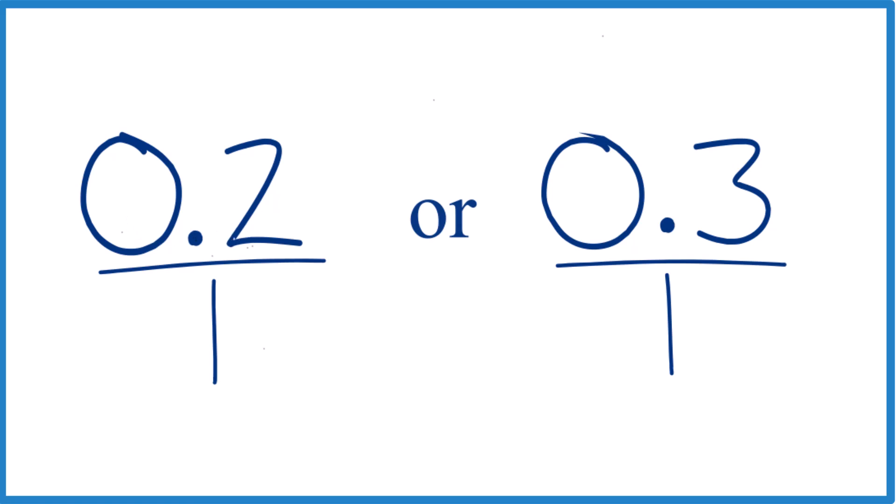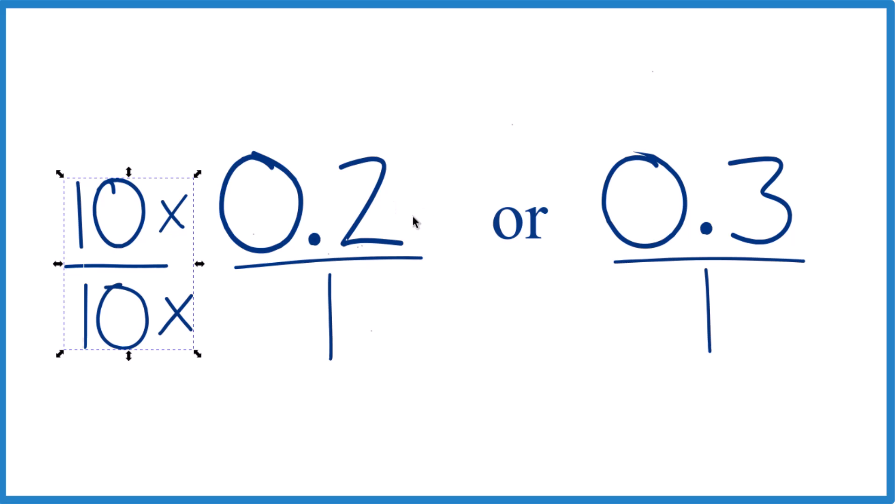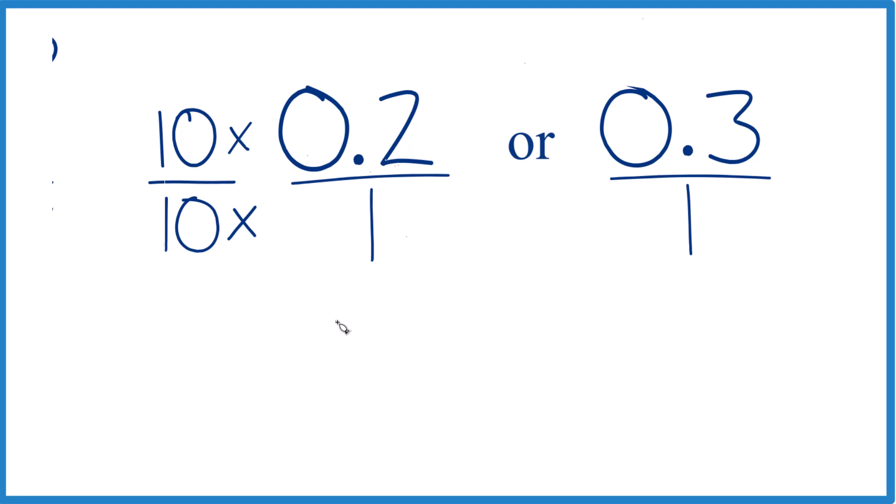Now if I multiply this by 10, I'd get a whole number. So I'm going to multiply the numerator by 10 to get a whole number, but I'll also multiply the denominator by 10, because 10 divided by 10 is 1, so it doesn't really change the value, just the way it's represented. 10 times 0.2 is 2, 10 times 1 is 10. So there's our fraction, 2 tenths.